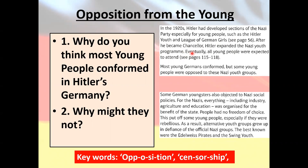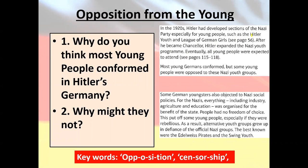After he became Chancellor, Hitler expanded the Nazi youth program. All young people were expected to attend the Hitler Youth and the League of German Girls — we will be looking at these in more detail later in the unit. Most young Germans conformed.